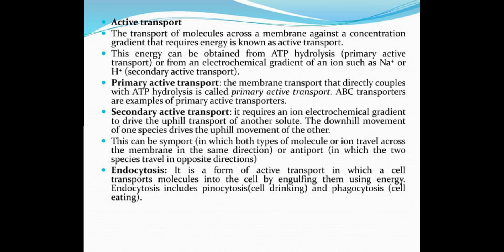Second, active transport. The transport of molecules across the membrane against a concentration gradient that requires energy is known as active transport. This energy can be obtained from ATP hydrolysis — that is primary active transport — or from an electrochemical gradient of an ion such as sodium or hydrogen — that is secondary active transport.